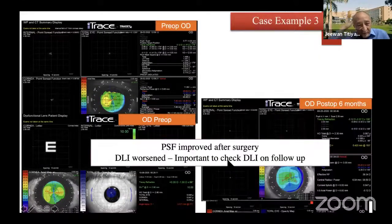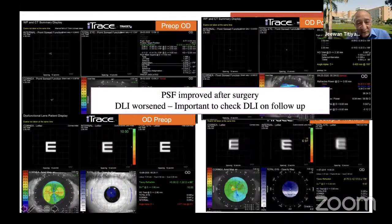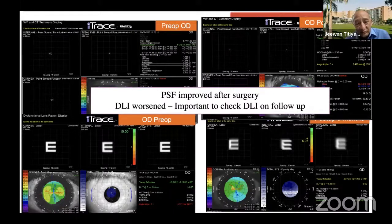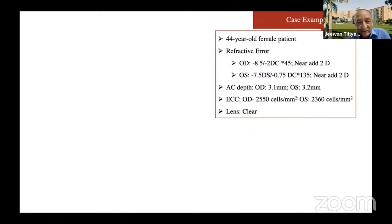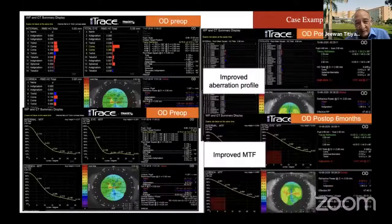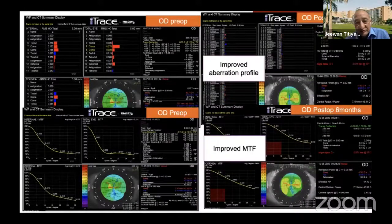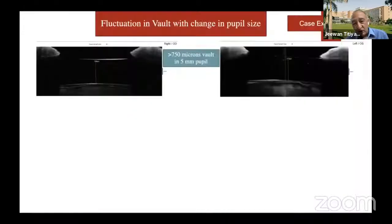This is one patient where you can see DLI worsens subsequently — this is a very important indicator in the post-op period to assess these patients, apart from their visual acuity examination and refraction. If you have access to iTrace, that can give you a dysfunctional lens index, and that can be the criteria for assessment of these patients. Another patient actually improved subsequently after six months — MTF and aberration profile. So this is how most patients would do quite well.